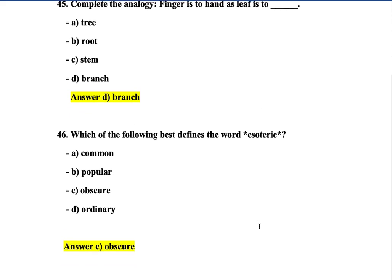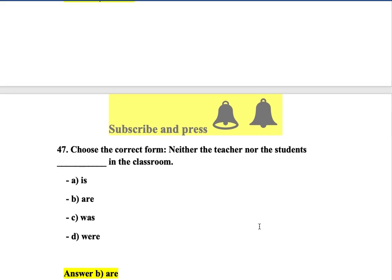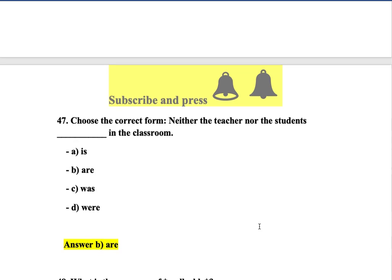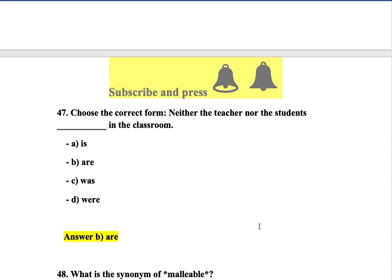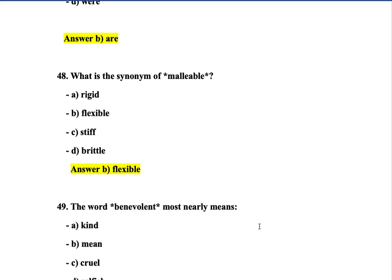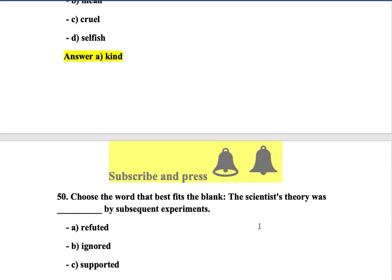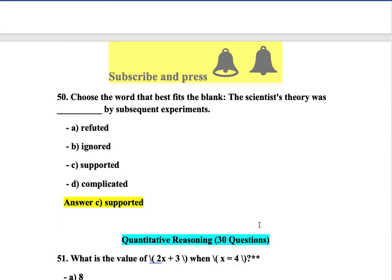Question 43: What does 'sublime' mean? Elevated — option C is correct. Question 44: The word 'meticulous' most nearly means thorough — option B. Question 45: Complete the analogy — finger is to hand as leaf is to branch — option D. Question 46: Which best defines 'esoteric'? Obscure. Question 47: Use the correct form — 'Neither the teacher nor the students were in the class' — subject-verb agreement: since 'students' is plural, 'were' is correct. Question 48: What is the synonym of 'malleable'? Flexible — option B. Question 49: The word 'benevolent' means kind.